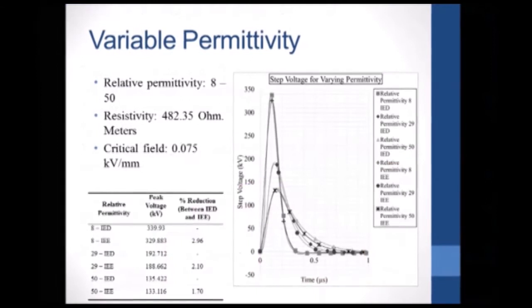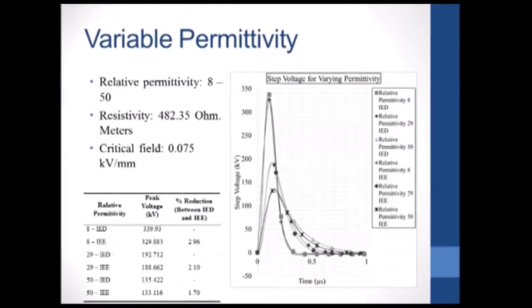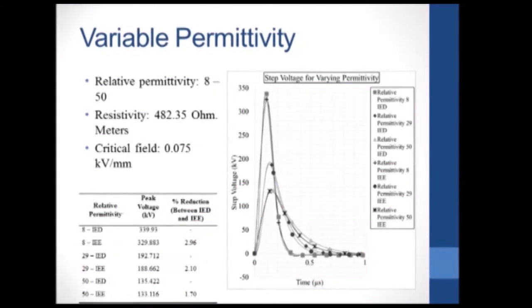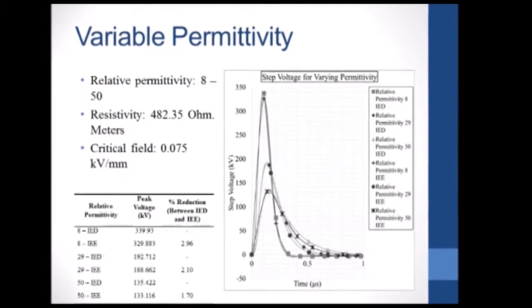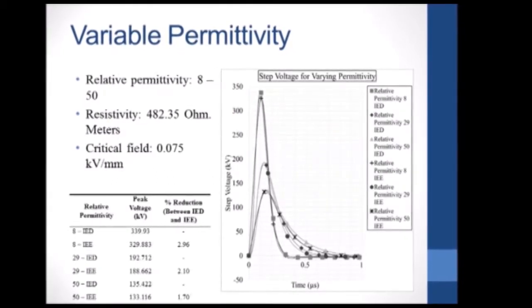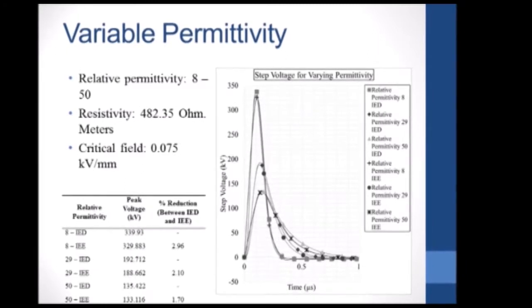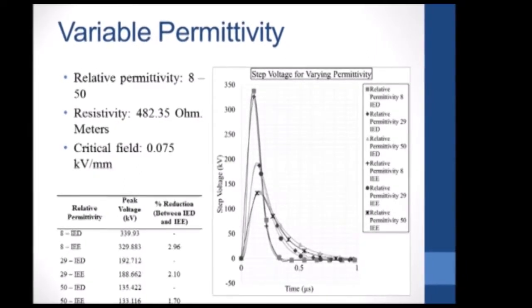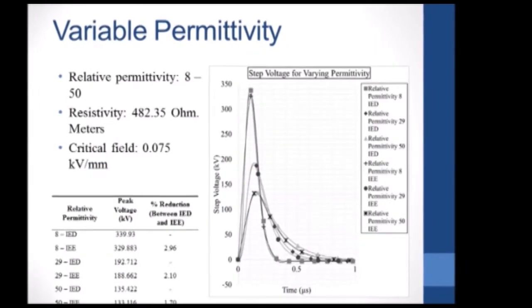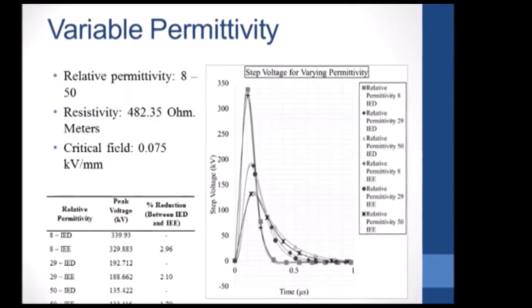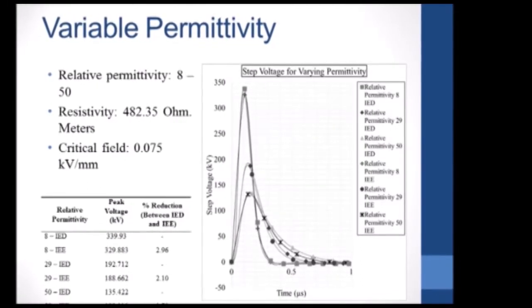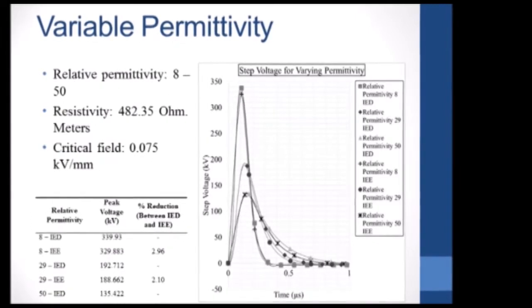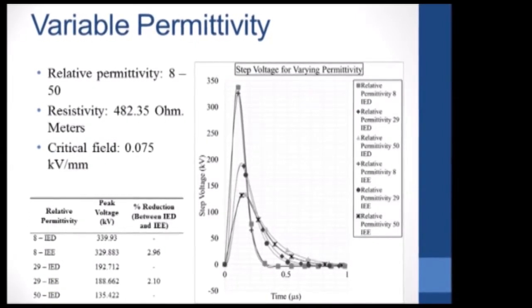For the variable permittivity, the permittivity was increased from 8 to 50 in three steps. The resistivity was fixed at 482.35 ohm meters, which is the average resistivity, and the critical field was set to 0.075 kV per mm, which is the worst case scenario for soil ionization onset. As can be seen from the table, the effect of soil ionization seems to decrease with increasing permittivity.